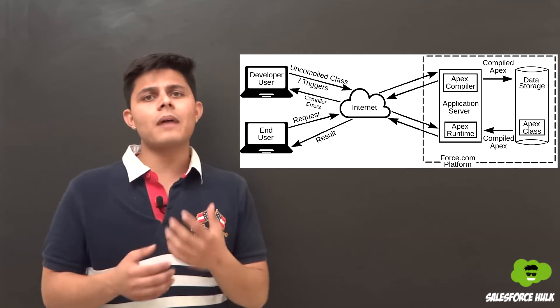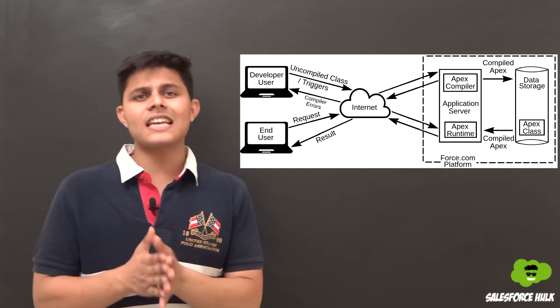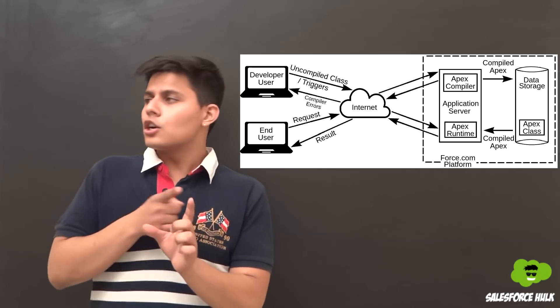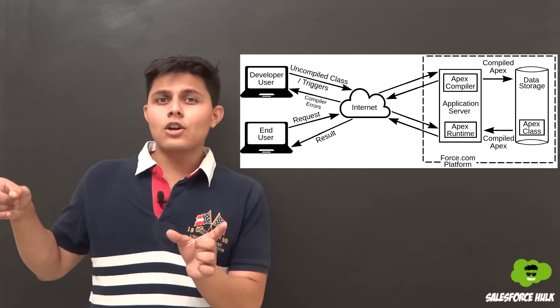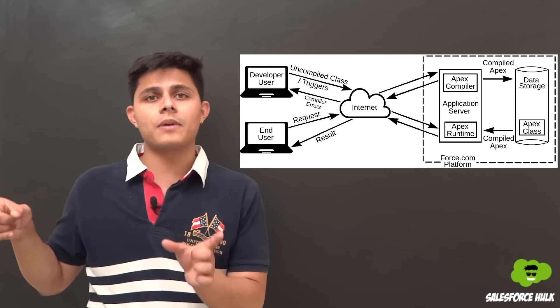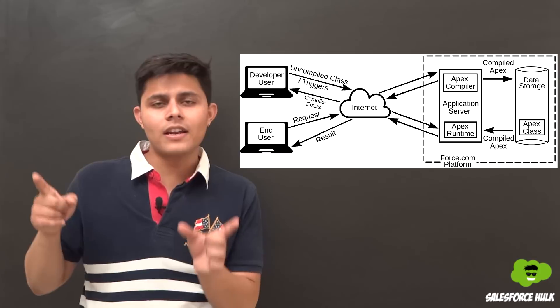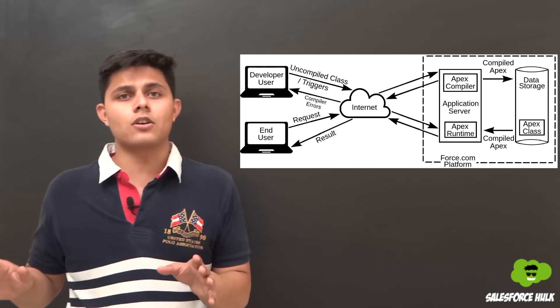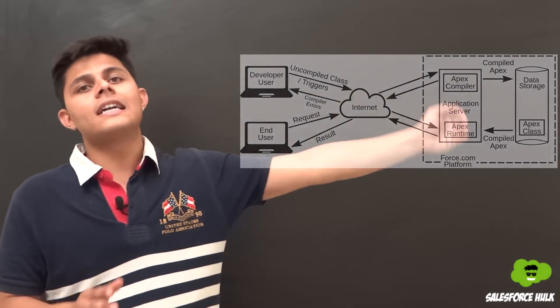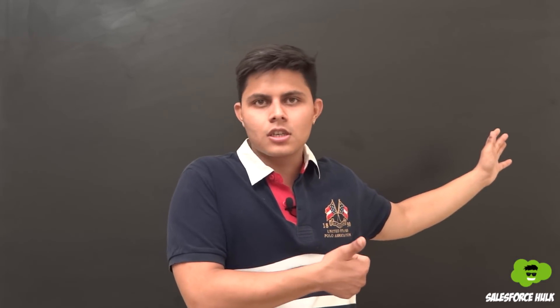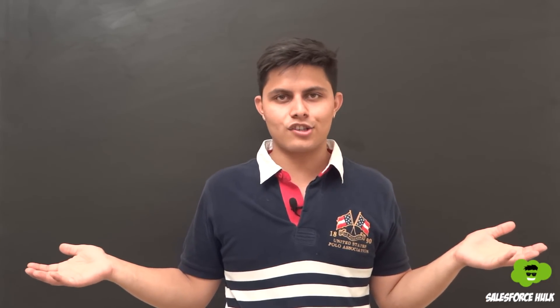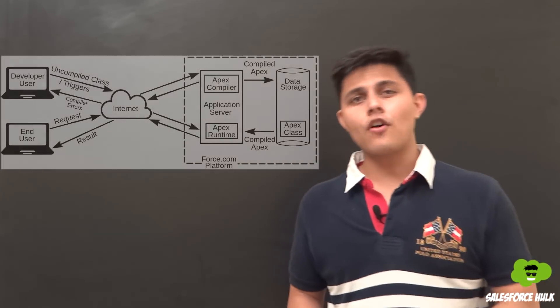If there is any error during compilation, the compiler returns that error to the developer. The code will never get saved until all errors are removed — it will only be stored in the database as compiled Apex once error-free. On the server side you have the Force.com platform with an application server and data storage; on the client side all you need is a browser and an internet connection.